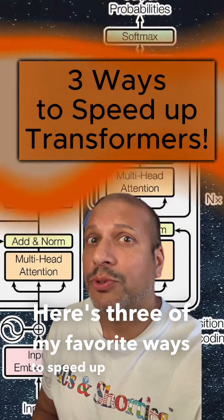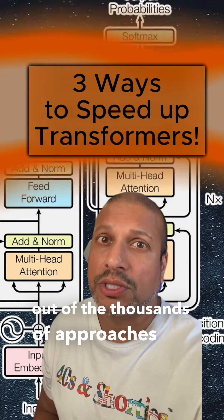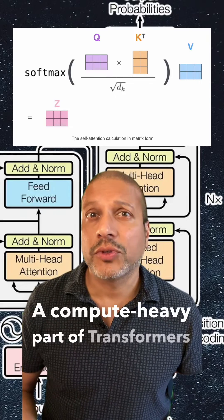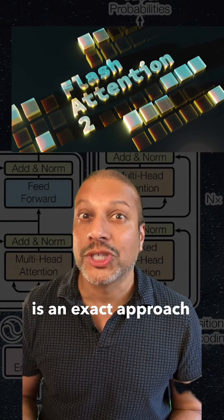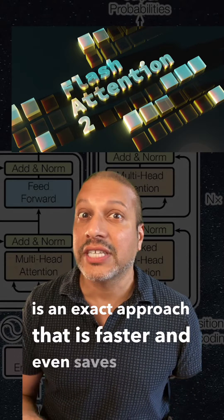Here's three of my favorite ways to speed up transformers out of the thousands of approaches out there. A compute-heavy part of transformers is calculating attention. Flash attention is an exact approach that is faster and even saves memory.